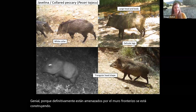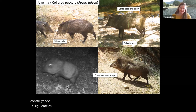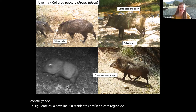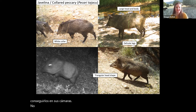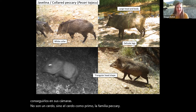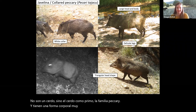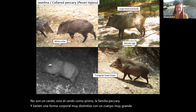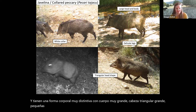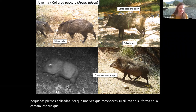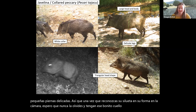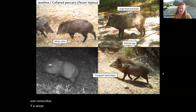The javelina is a common resident in the Sky Island region. They are not a pig, but a pig-like cousin in the peccary family. They have a very distinctive body shape: very large body, big triangular head, delicate little legs. Once you recognize their silhouette on camera, you'll never forget it. They have a distinctive white collar, and sometimes they puff up like porcupines.